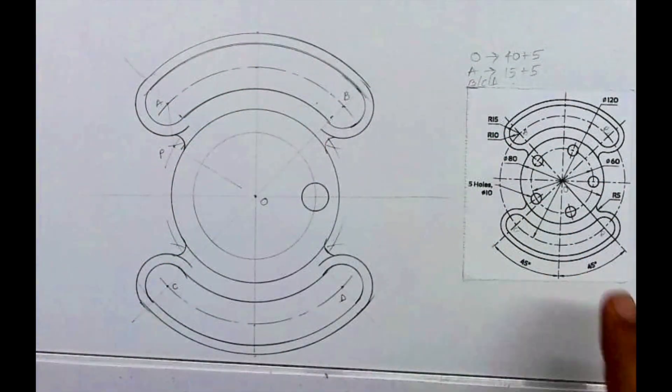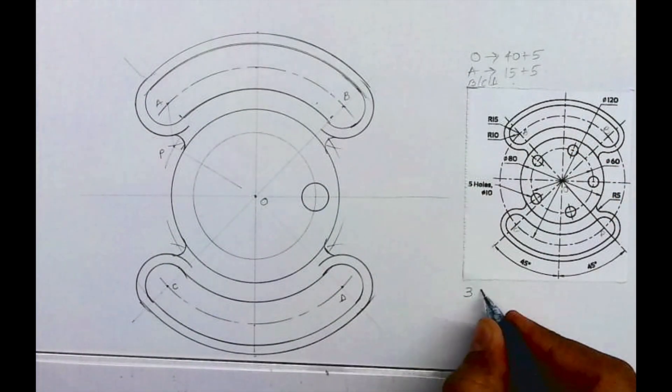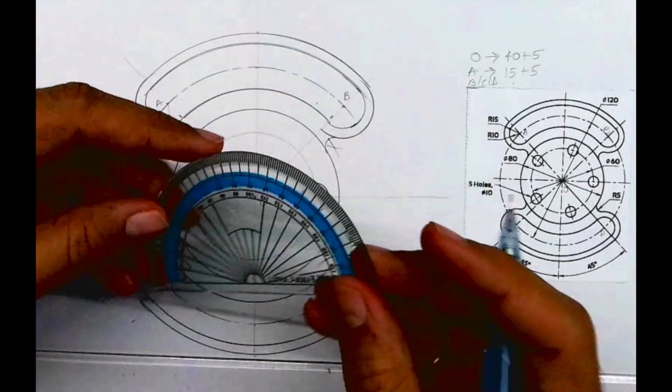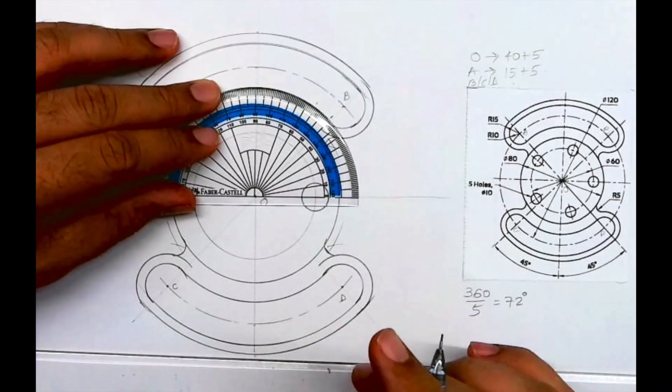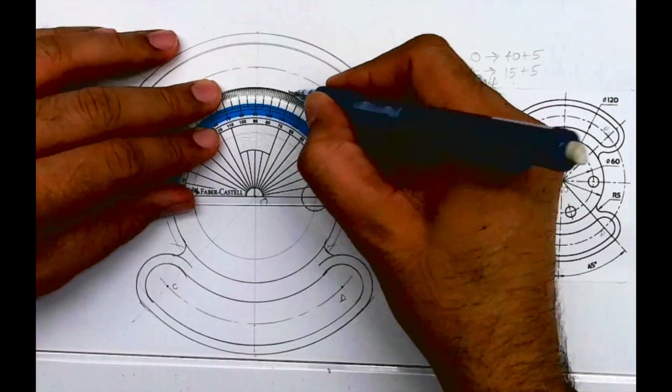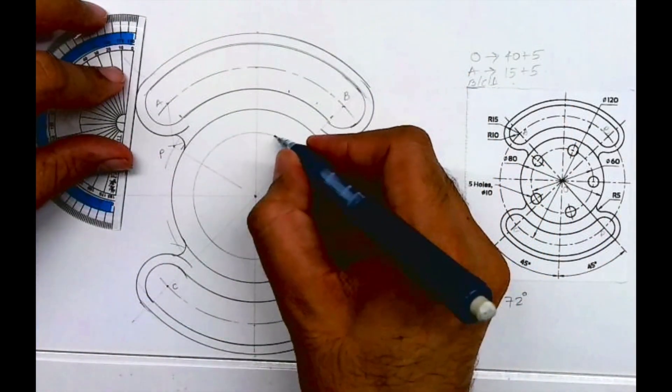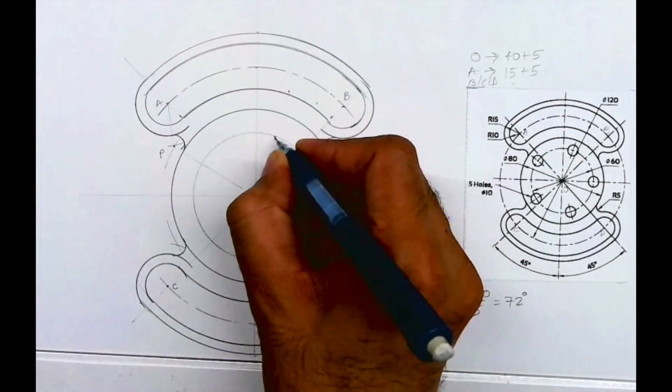Now if you see there are five circles, so we should draw 72 degrees. 360 divided by 5 will be 72. So I need to mark 72 degrees, so again I will use protractor. I will mark 72 degrees, and wherever it will intersect with that circle, this is point one and this is point two.